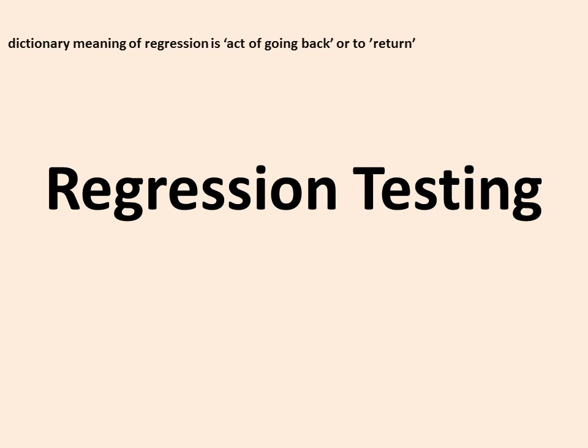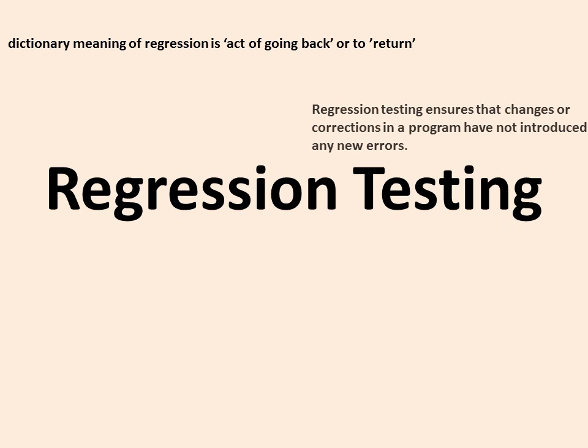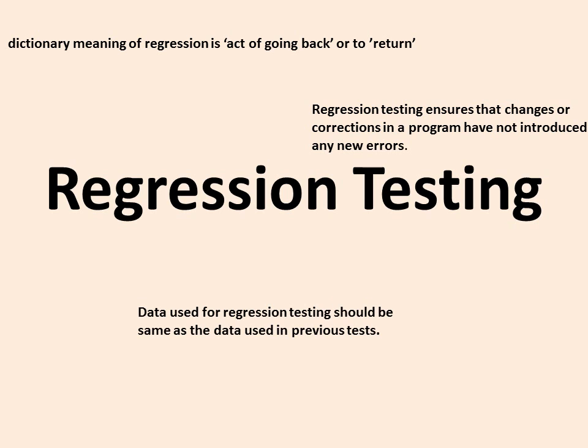The dictionary meaning of 'regression' is the act of going back or to return. In regression testing, we again check that changes or corrections in a program have not introduced any new errors. The data used for regression testing should be the same as the data used in the previous test — only then can objective regression testing be achieved.